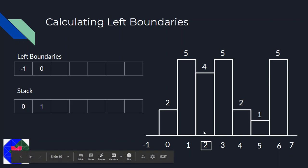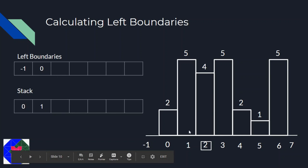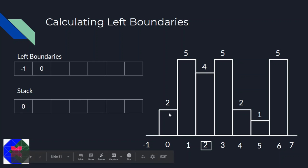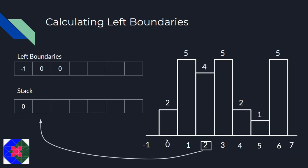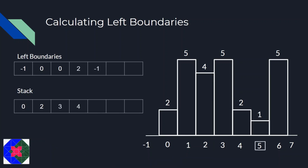For index 2 with height 4: we see index 1 is on the stack, corresponding to height 5 which is greater than 4, so we pop it. Now we have index 0 on the stack corresponding to height 2, which is lesser than 4, so we stop popping. We write 0 as the left boundary and push index 2 into the stack. You can do similarly for indices 3 and 4.